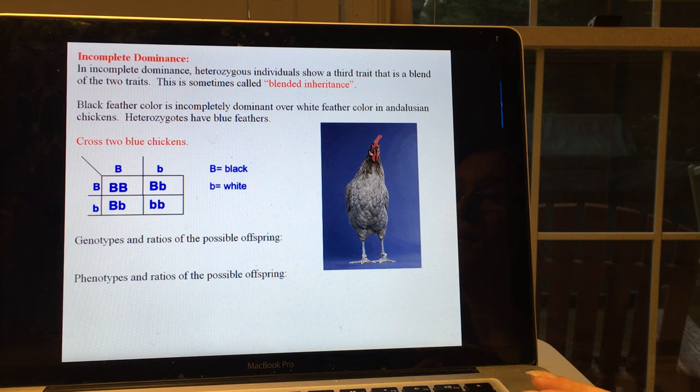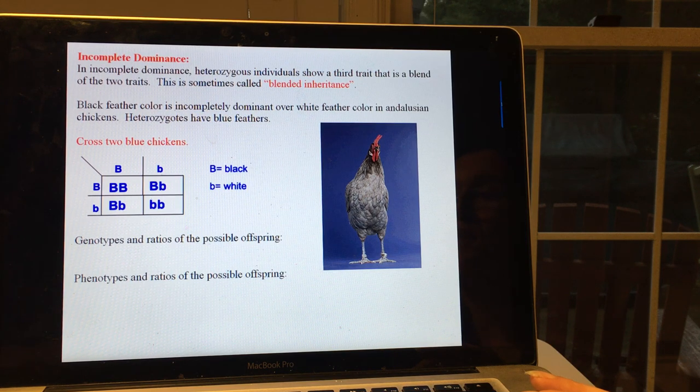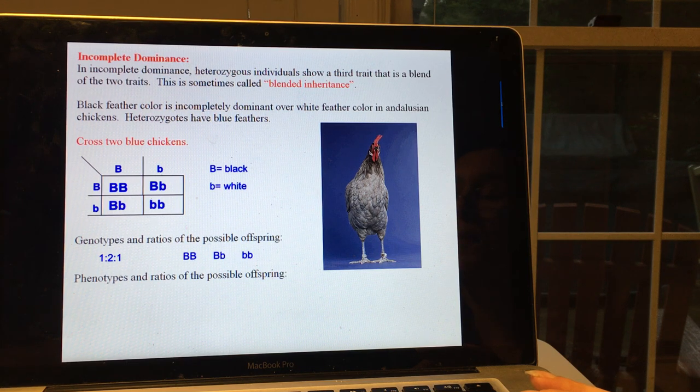So the genotypes and the ratios are still a 1 to 2 to 1 ratio of big B big B, big B little B, to little B little B.